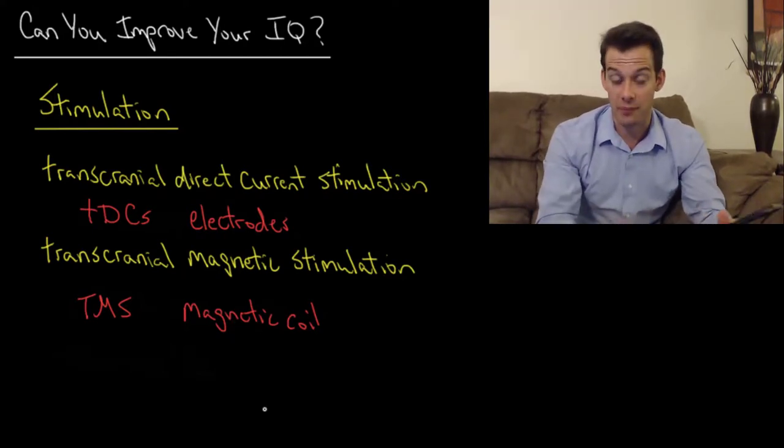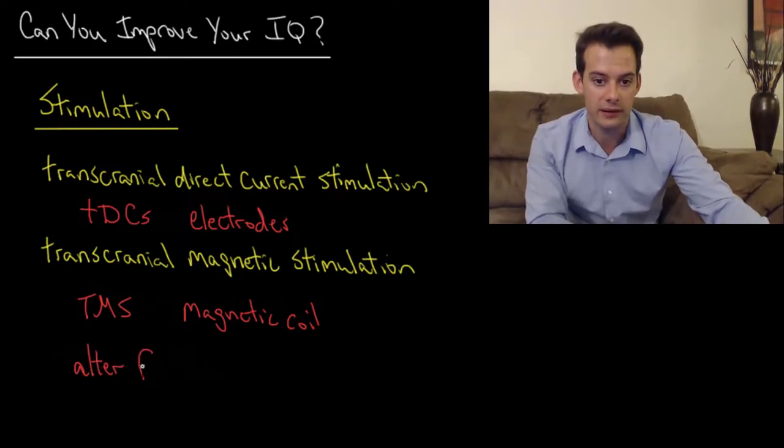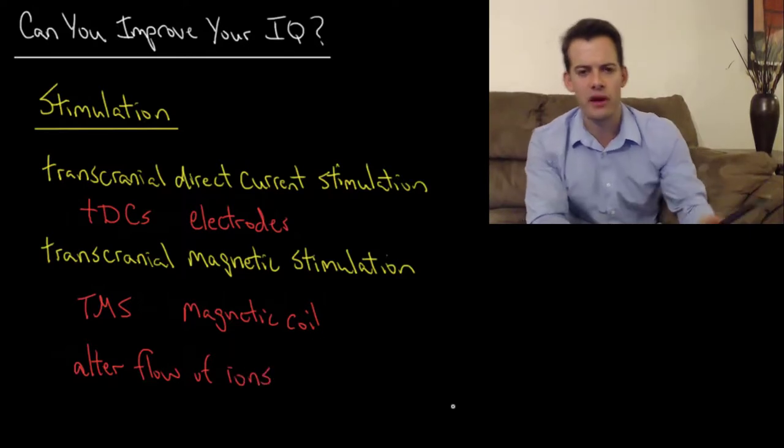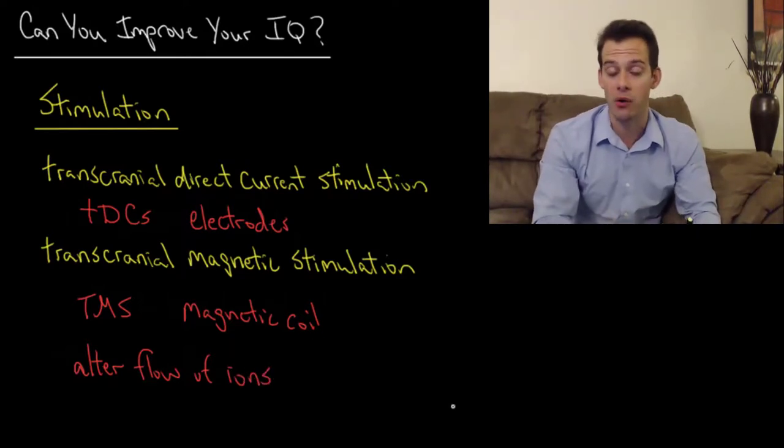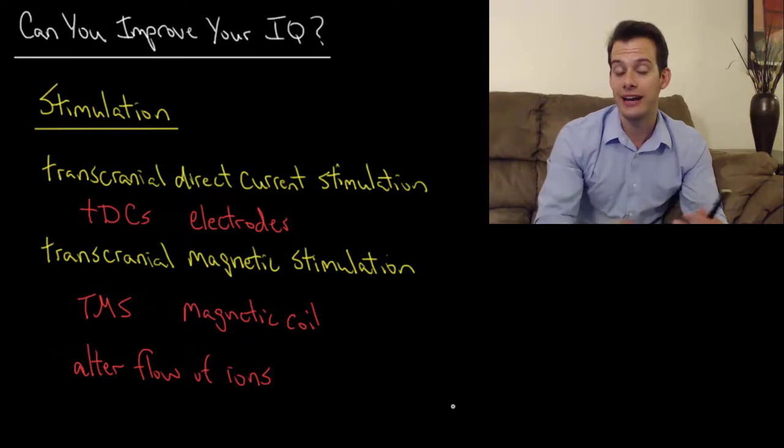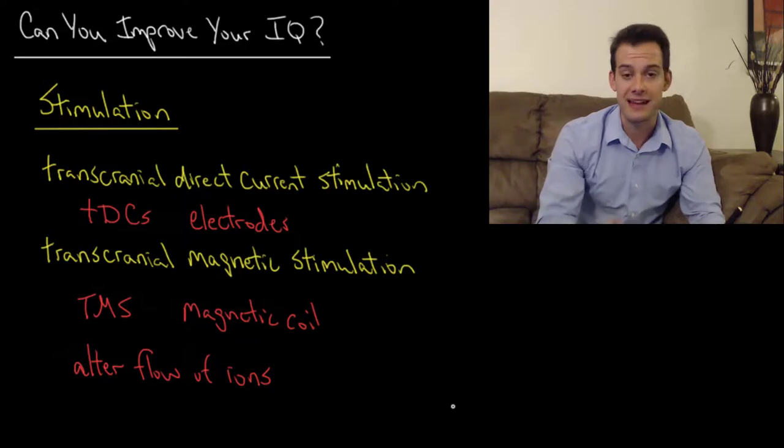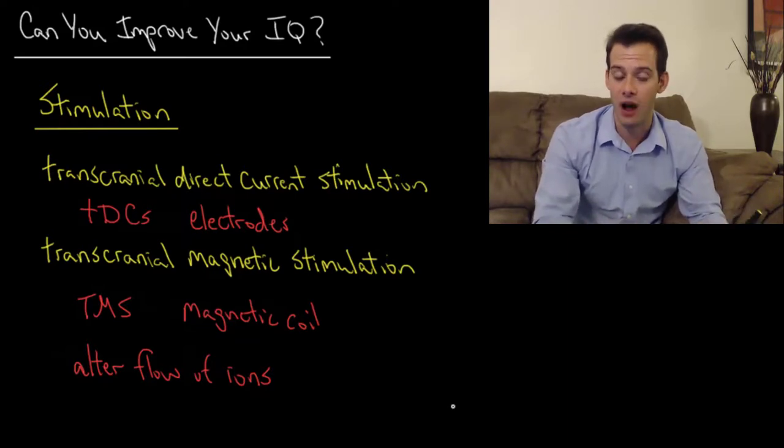So what does this stimulation accomplish? Well what this does is it alters the flow of ions in the brain. And so this means that it can make neurons either depolarized or hyperpolarized. In other words, it changes the likelihood that neurons will fire. It can either stimulate them, make them more likely to fire, or it can inhibit them, make it less likely that those neurons will fire. And so by altering the flow of ions in different brain regions, it seems that we can influence different cognitive abilities.